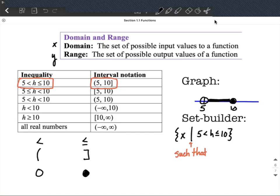Now I did make a mistake here because h is our variable. Instead of being x out in front here, we replace x with h. So this would be read off as the set of h such that 5 is less than h is less than or equal to 10.